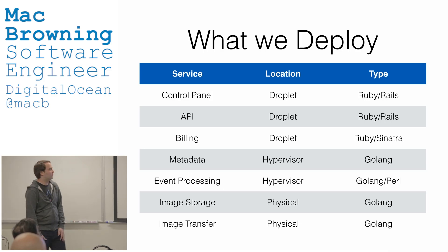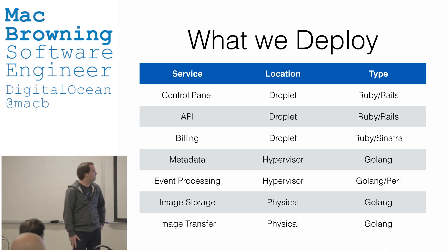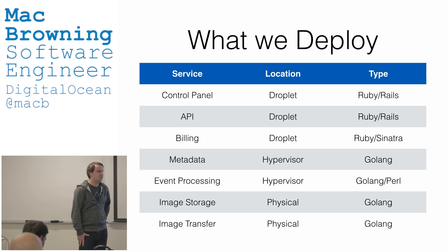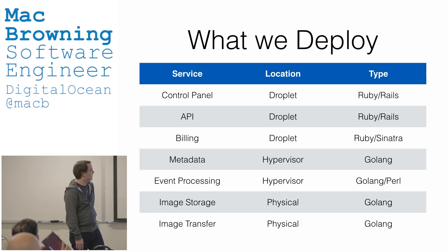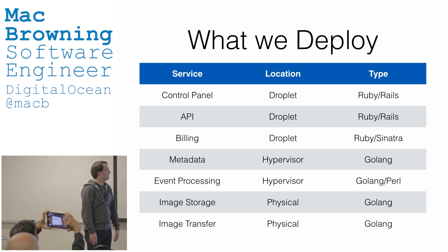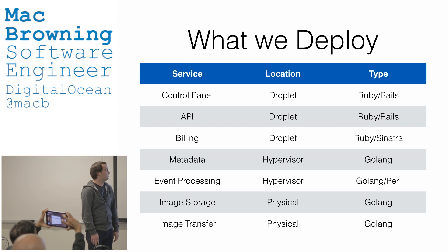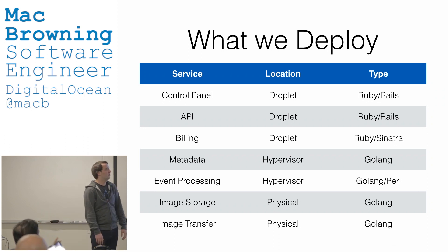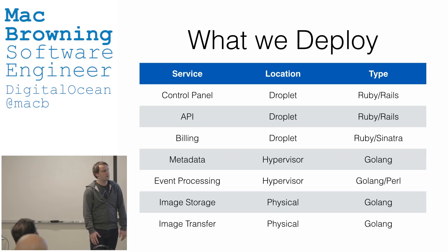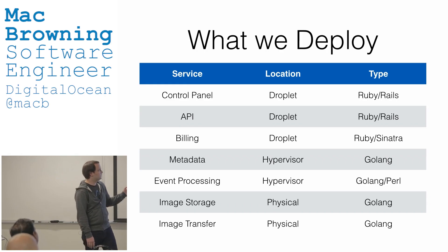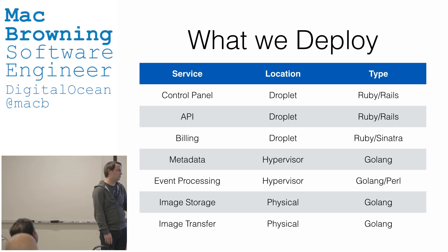Here are some examples of what we deploy at DO to give you an idea of our stack. The top two — control panel and API — are pretty straightforward, exactly what they sound like. They're deployed on droplets and they're both Rails applications. Billing is also a Ruby application, but it's not Rails, it's Sinatra.